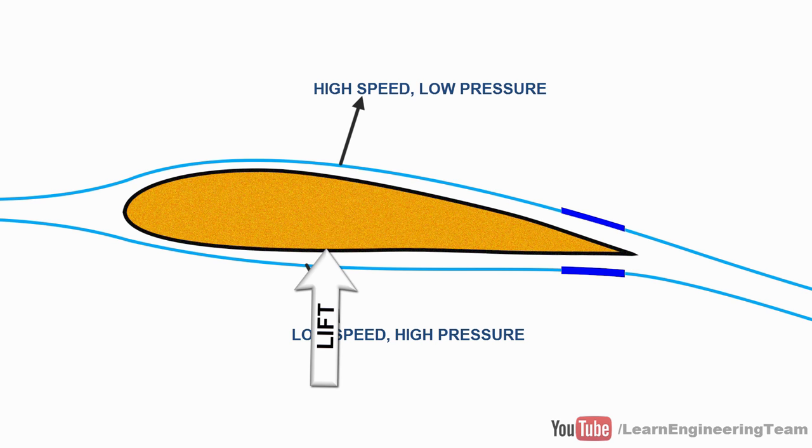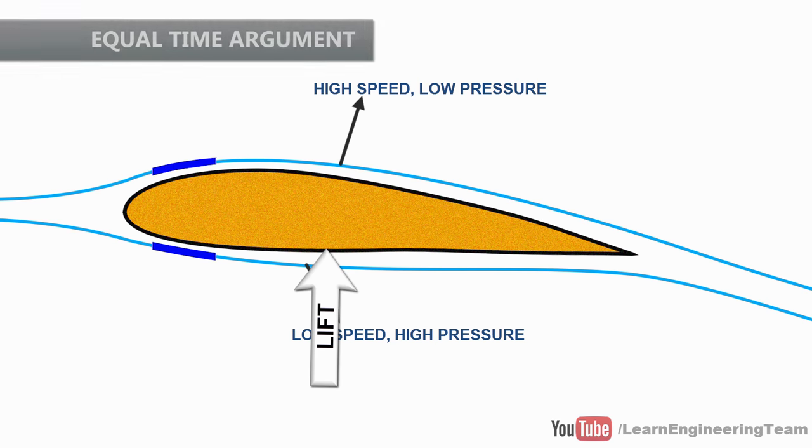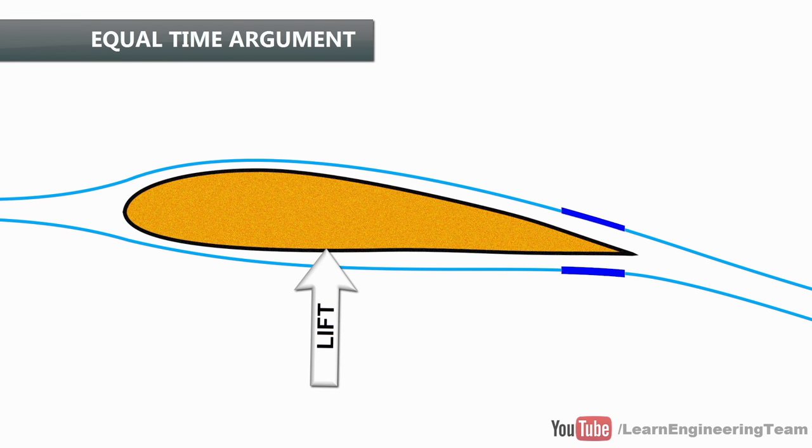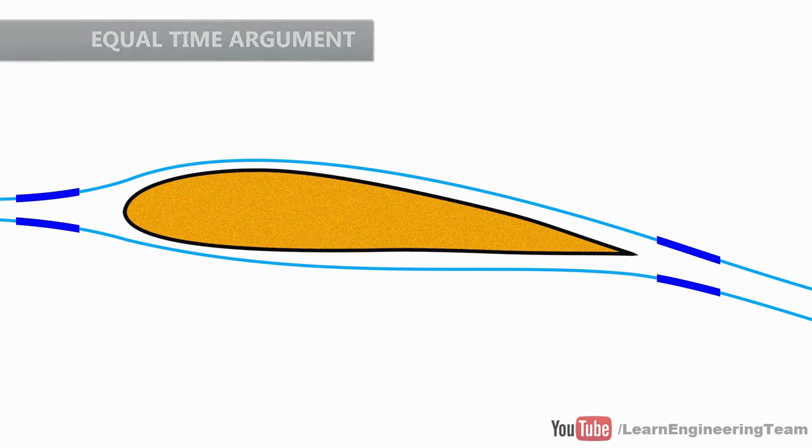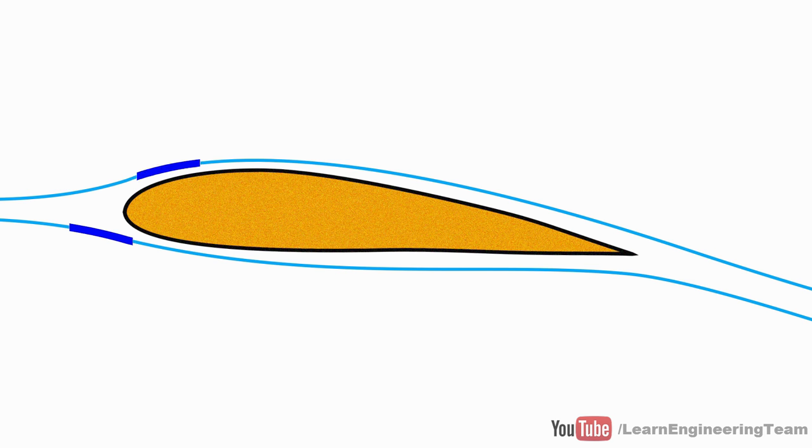This argument more specifically is known as the equal time argument. The equal time argument is a beautiful way to explain lift, but it's completely wrong. The first mistake pertains to how two particles starting from the same location reach the trailing edge at the same time. This is a completely absurd argument. There is no law in physics to support it. The two particles can leave for a completely different journey and may not meet in their lifetime.